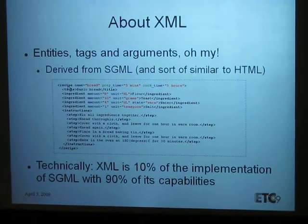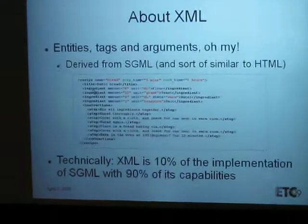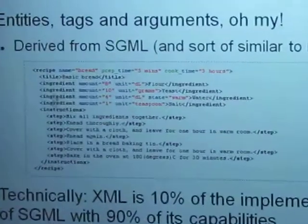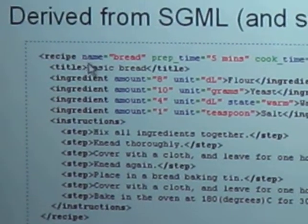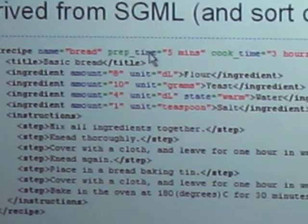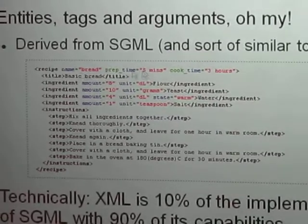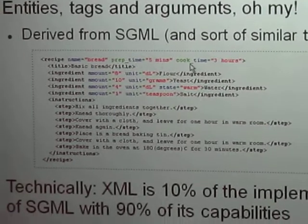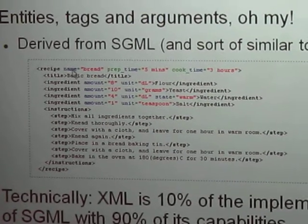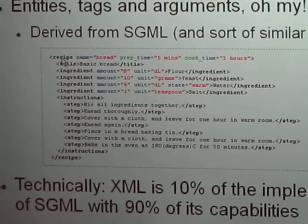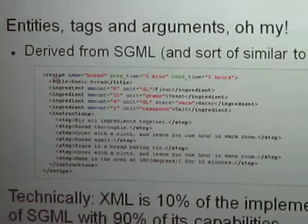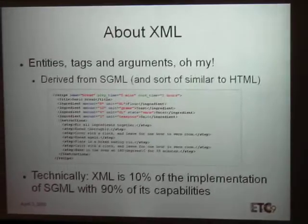We have tags in XML: recipe type, ingredient, instructions — these are all tags. And then the arguments are version, so name, time, name, prep time, and cook time are attributes for the rest of the tag.